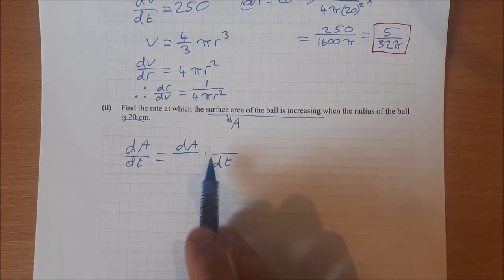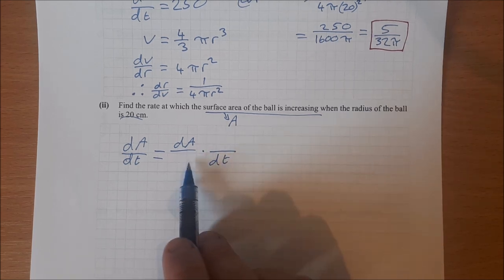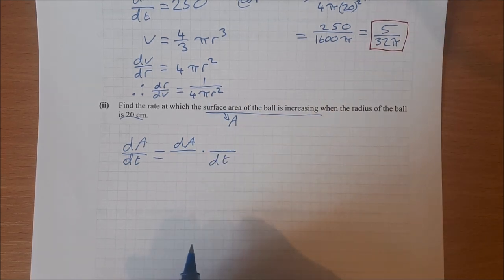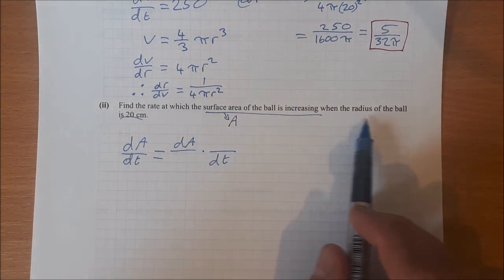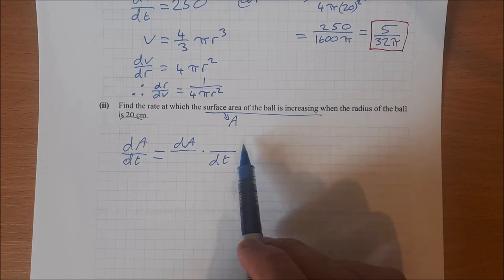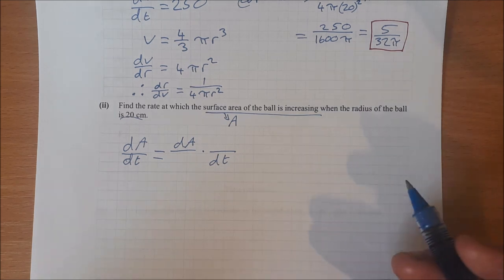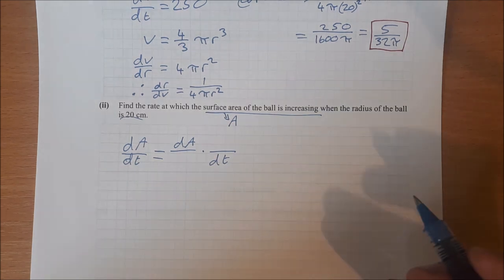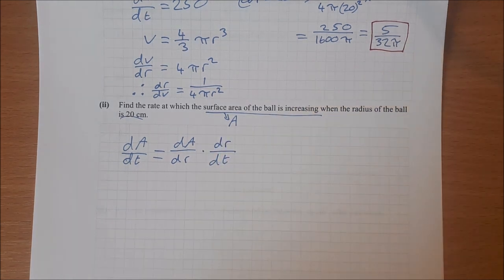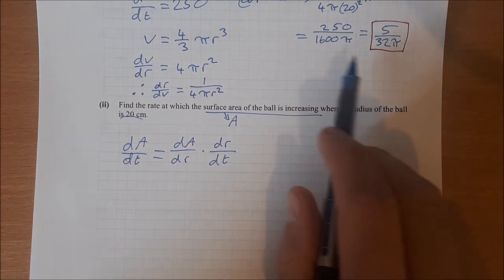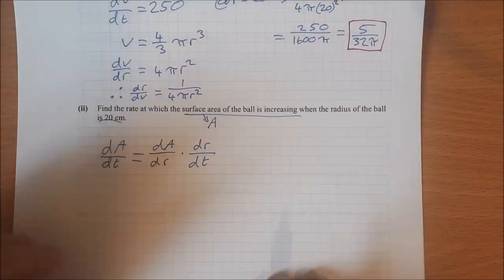So I'm going to do the same thing. I'm going to split this up, dA times dt, and I'm going to think what can I use here. What else do I have in the question that I can use? This question has nothing to do with volume, so I'm not going to use dv. What else is there to do with a ball, with a sphere? Well, it's got to be radius, isn't it? So dr, dr. I've actually already found dr/dt.